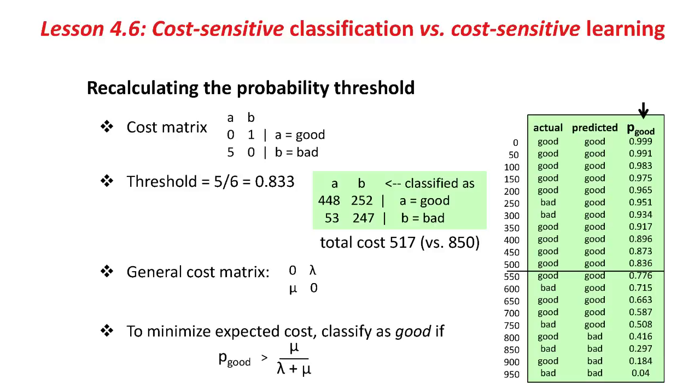In general, it's not hard to show that given a general cost matrix 0, lambda, mu, 0, you minimize the expected cost by classifying instances good, or setting the threshold, at mu over lambda plus mu, which is where we got the 0.833 from for this problem.